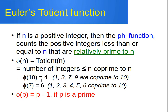Phi(7) equals 6 because the positive integers 1, 2, 3, 4, 5, 6 are all co-prime to 7. And remember this rule: if p is a prime number, then phi(p) equals p minus 1. For example, 13 is prime, so phi(13) = 13 − 1 = 12. Please remember this rule: phi(p) = p − 1 if p is prime.